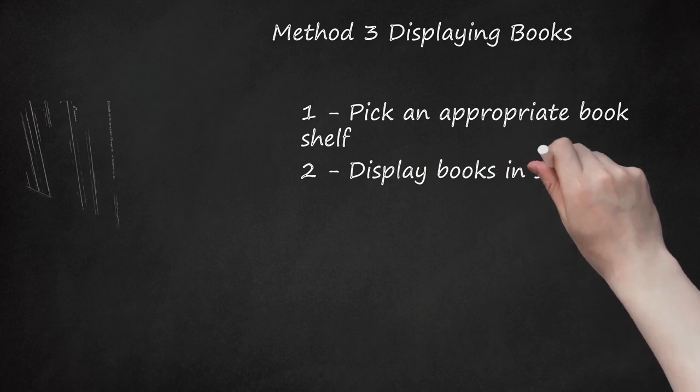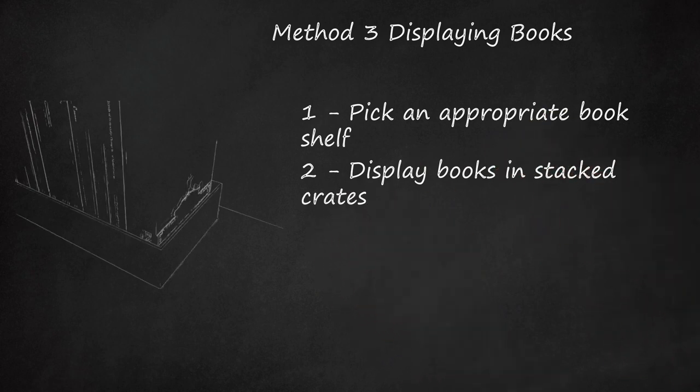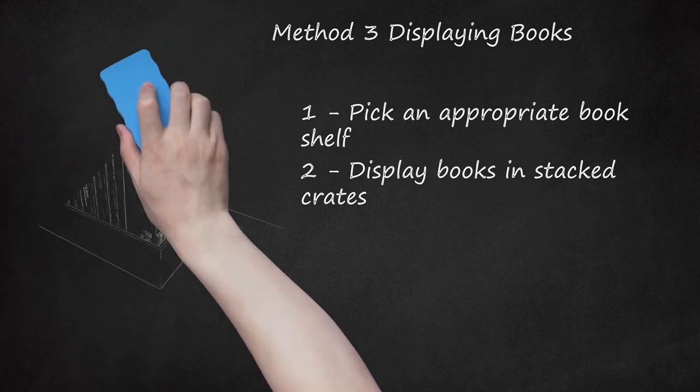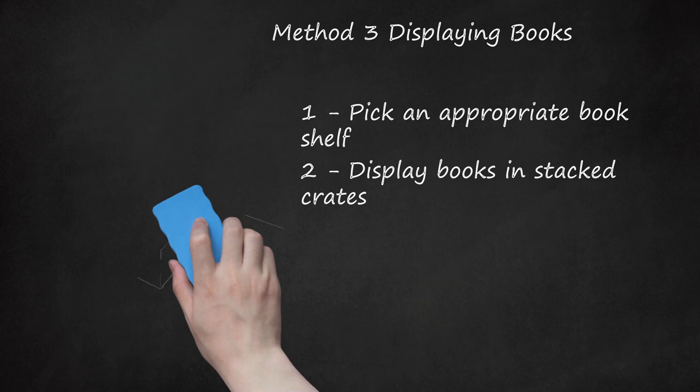Display books in stacked crates. One more quirky and off-kilter way to store and access your books is to line them up in a series of stacked wooden crates. Old milk crates or other boxes of various sizes can be reclaimed, then stacked in various patterns to fit the space that you have. Think of it as a DIY bookshelf. Crates allow you to organize your books into micro-genres, and they're also movable.